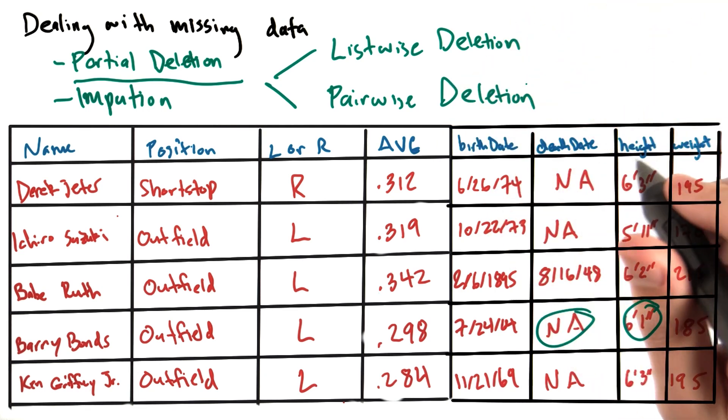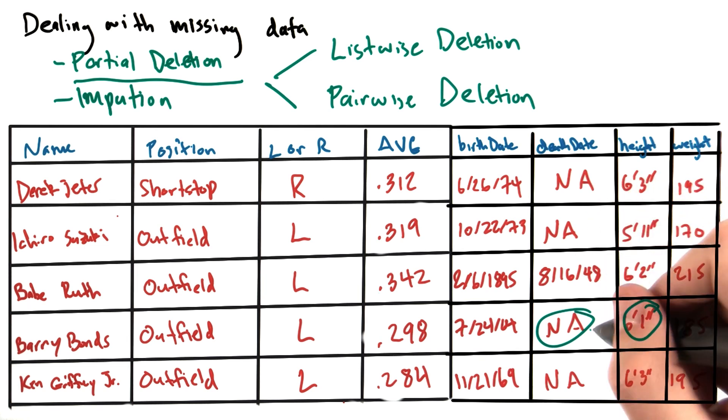So we wouldn't include Barry Bonds in our sample when calculating lifespan since there's no death date. But we would still use his height when calculating the average height of all baseball players.